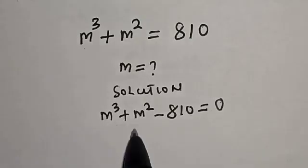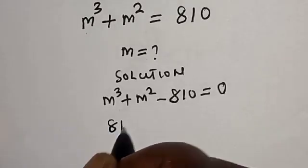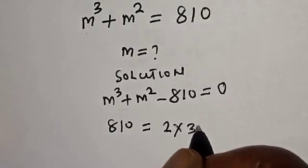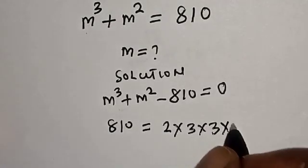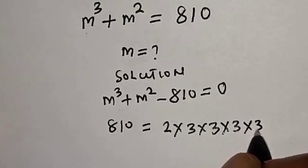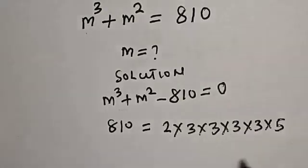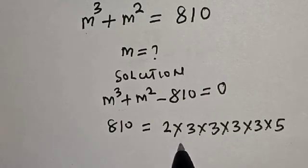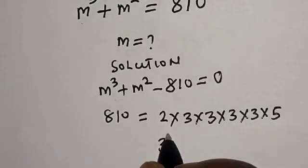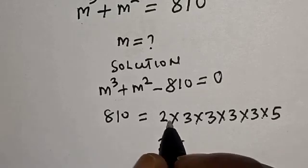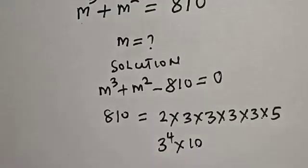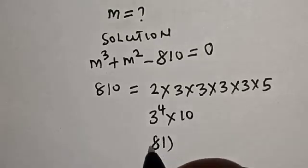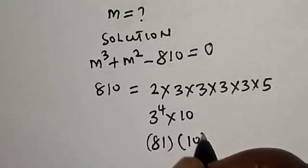m cubed plus m squared. 810 is equal to 2 multiplied by 3, multiplied by 3, multiplied by 3, multiplied by 5. Then this is 3 times 3 times 3 times 3 — we have 3 raised to power 4, multiplied by 2 times 5, that is 10. 3 raised to power 4 is 81, then multiply by 10.